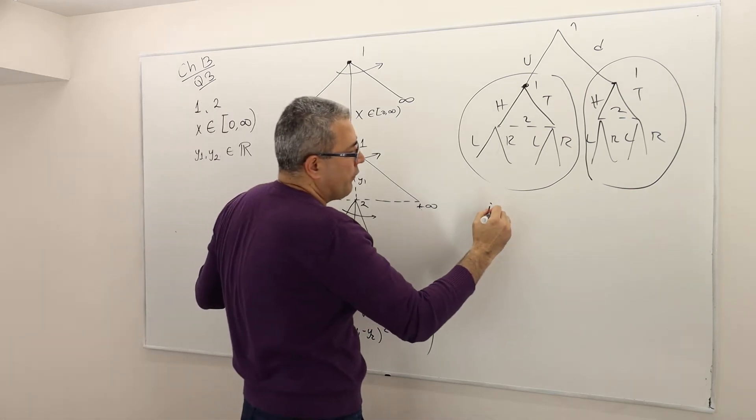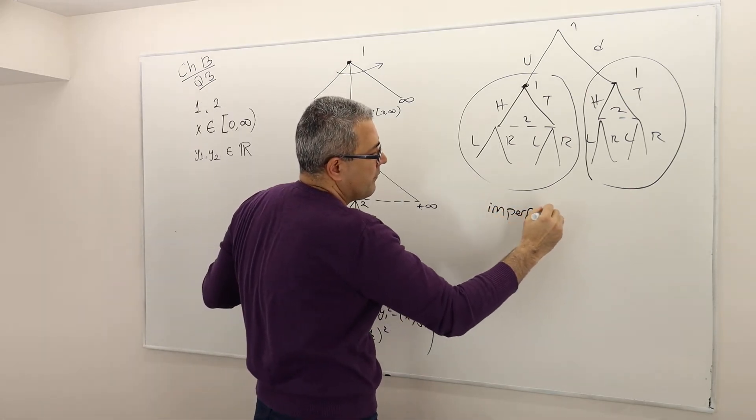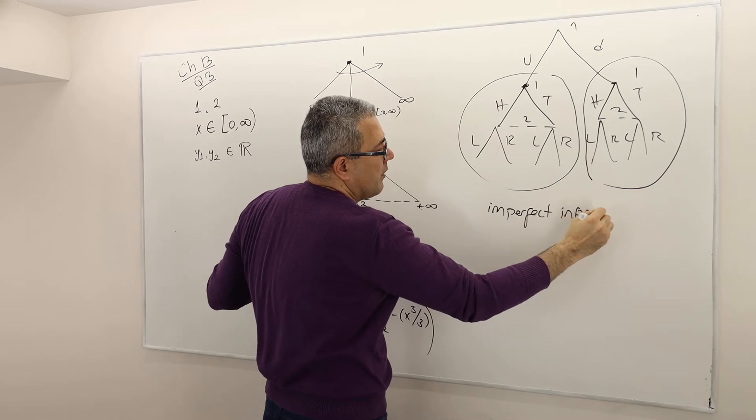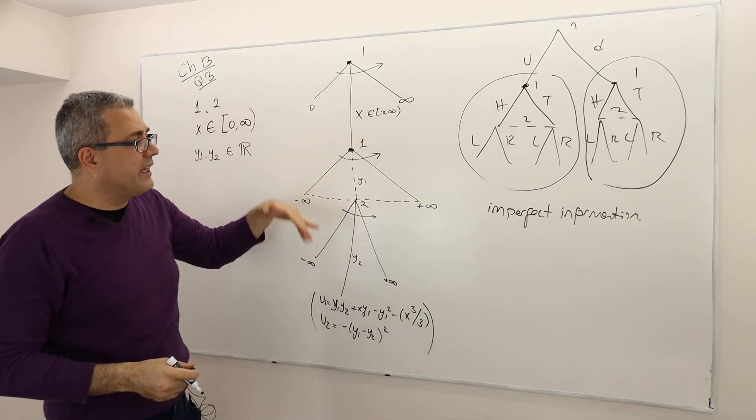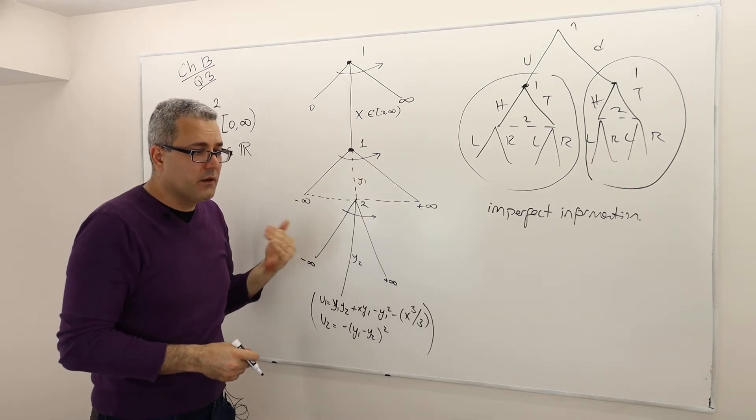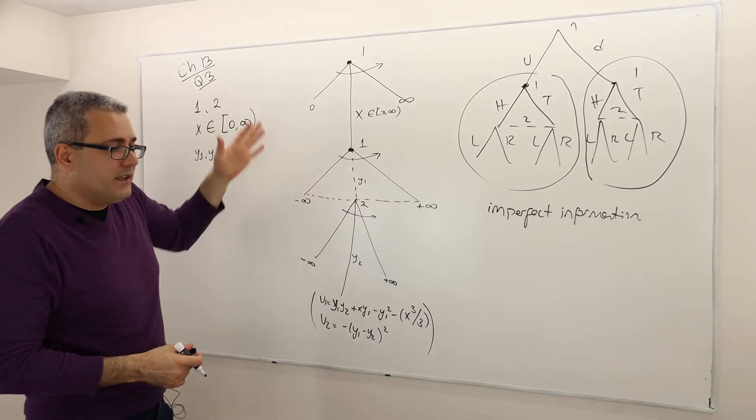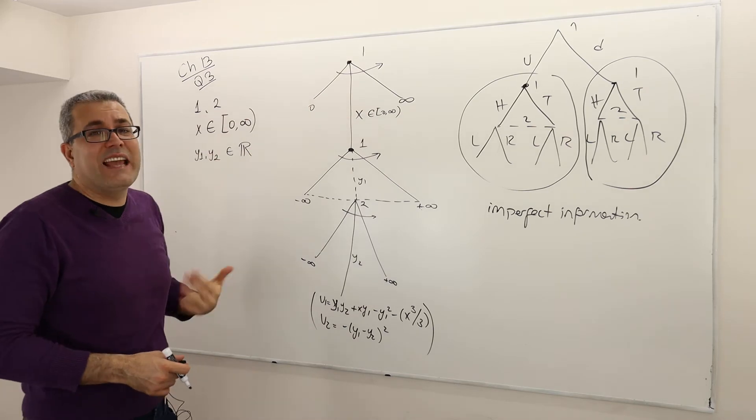So this is a game with imperfect information. Because player 2 cannot observe all player 1's actions. And so that's it. This is how we represent this game tree.